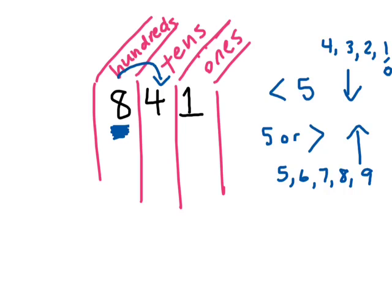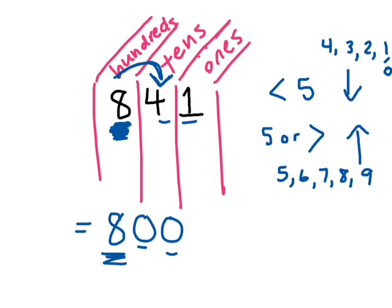Okay, so we look, we underline eight, which is our hundreds. We look at the number next to it, and it's less than five, which means that this is going to stay the same. So rounded to the nearest hundred would be eight that stays the same. And then we put zero, zero, two places after the eight, two digits, and it would be eight hundred to the nearest hundred.